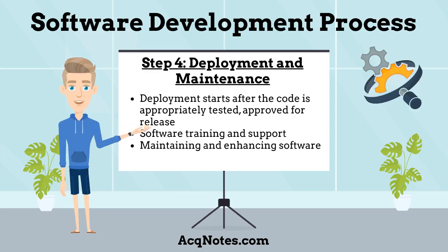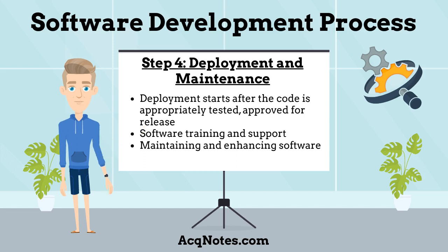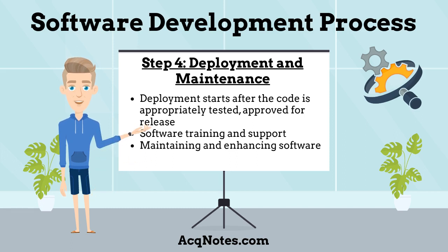The fourth and final step is deployment and maintenance. Deployment starts after the code is appropriately tested, approved for release, and sold or distributed into a production environment. This may involve installation, customization, testing, and possibly an extended period of evaluation. Software training and support are important, as the software is only effective if used correctly. Maintaining and enhancing software to cope with newly discovered faults or requirements can take substantial time and effort, as missed requirements may force software redesign.